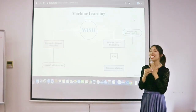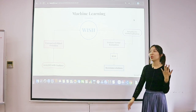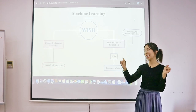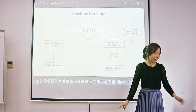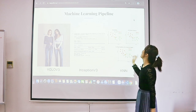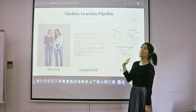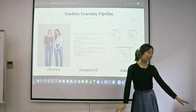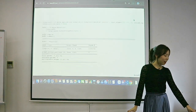I use Inception v3, a powerful pre-trained CNN model, to do feature extraction. It turns an image into a feature vector of shape 12,048, containing a lot of features and information about the image. Then I use KNN — K-Nearest Neighbors — to do the recommendations. The input image's feature vector is compared against existing items in the database by calculating distances, and the closest neighbors are recommended as visually similar items.